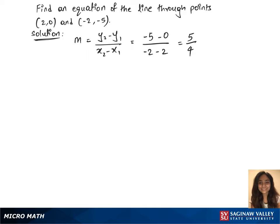We'll use the equation of the line formula now: y minus y1 equals m times x minus x1. Let's use the point (2,0) and plug it in the formula. y minus 0 equals 5 over 4 times x minus 2. And now we'll have y equals 5 over 4 times x minus 5 over 2.